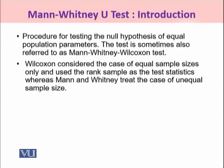The Mann-Whitney U-test uses a procedure to test the null hypothesis of equal population parameters, which in this case would be the medians. The test is sometimes also referred to as the Mann-Whitney-Wilcoxon test. Wilcoxon considered the case of equal sample sizes only and used the rank sum as the test statistic, whereas Mann and Whitney — the two researchers who worked on this test — treated the case of unequal sample sizes.